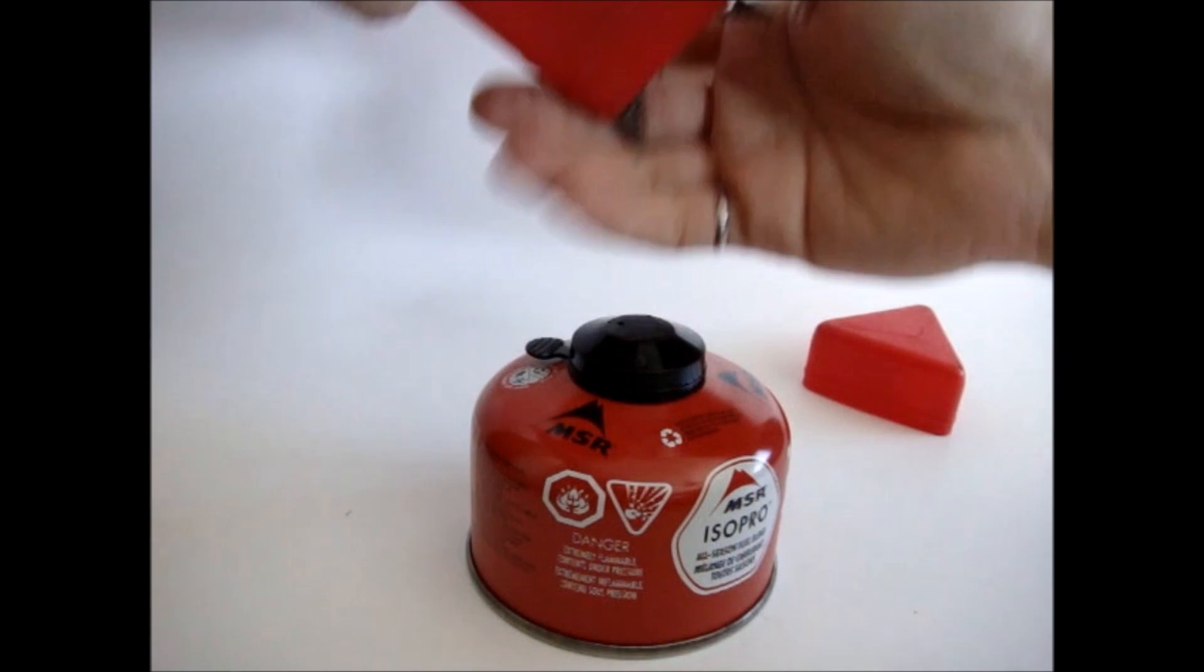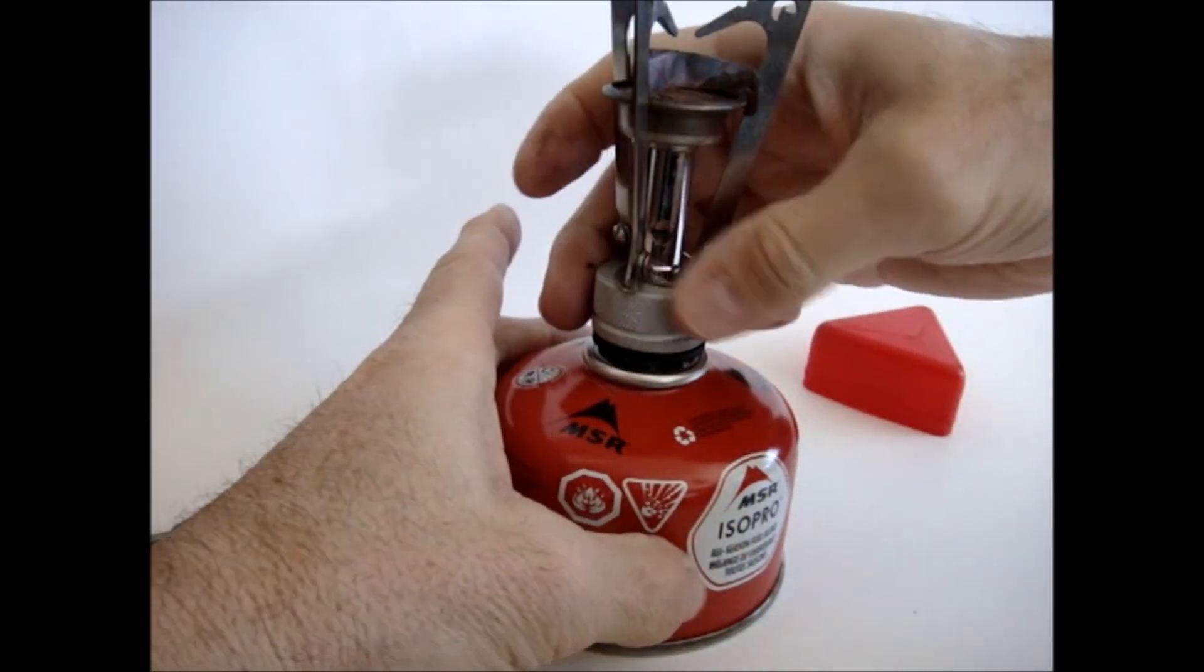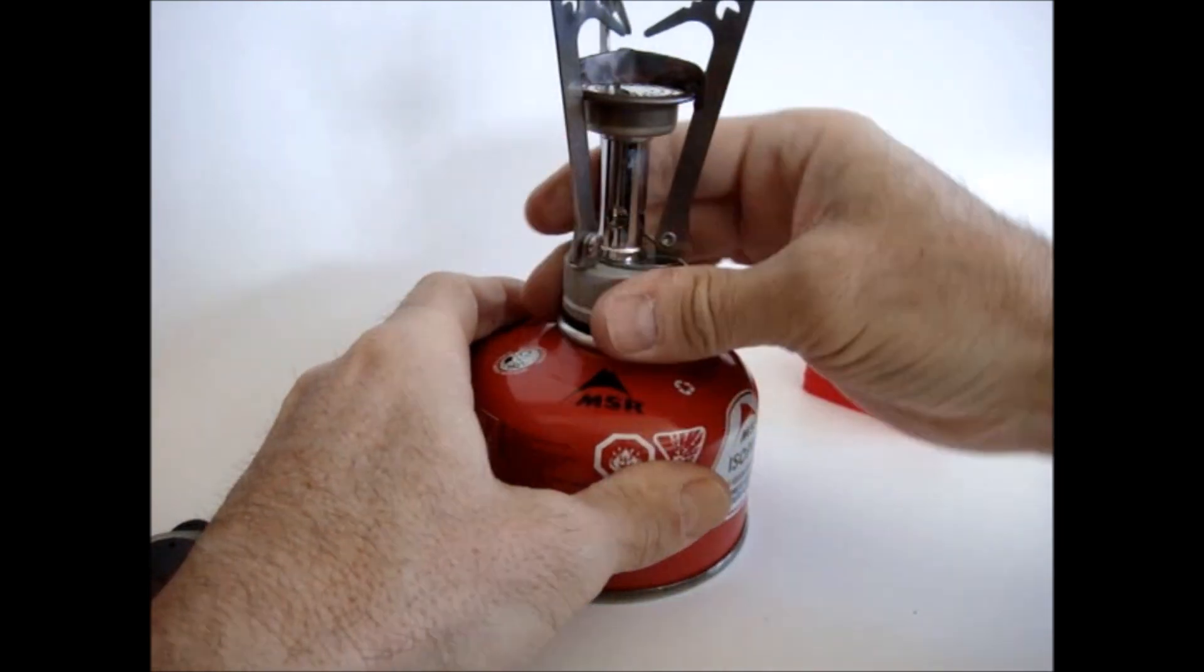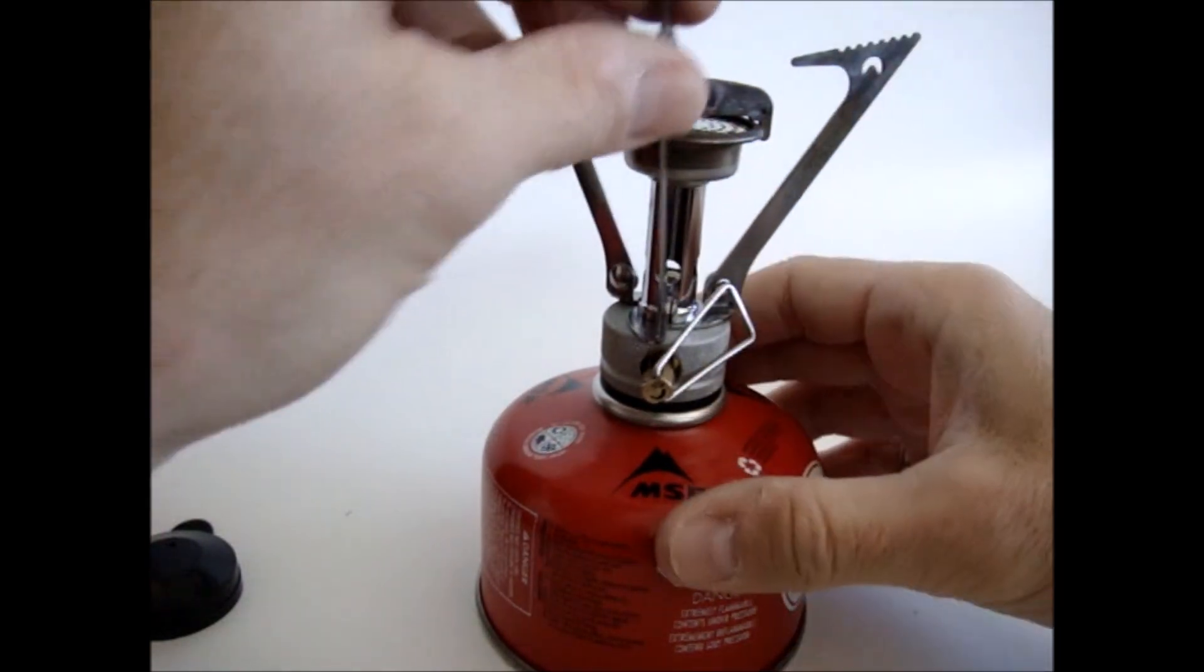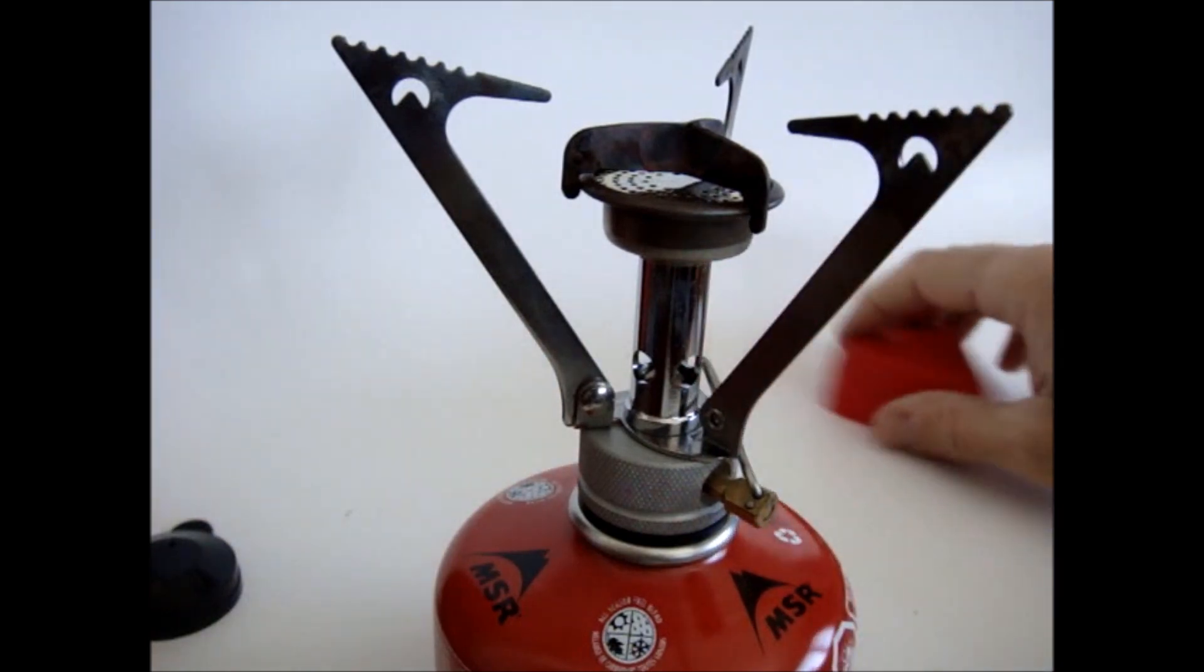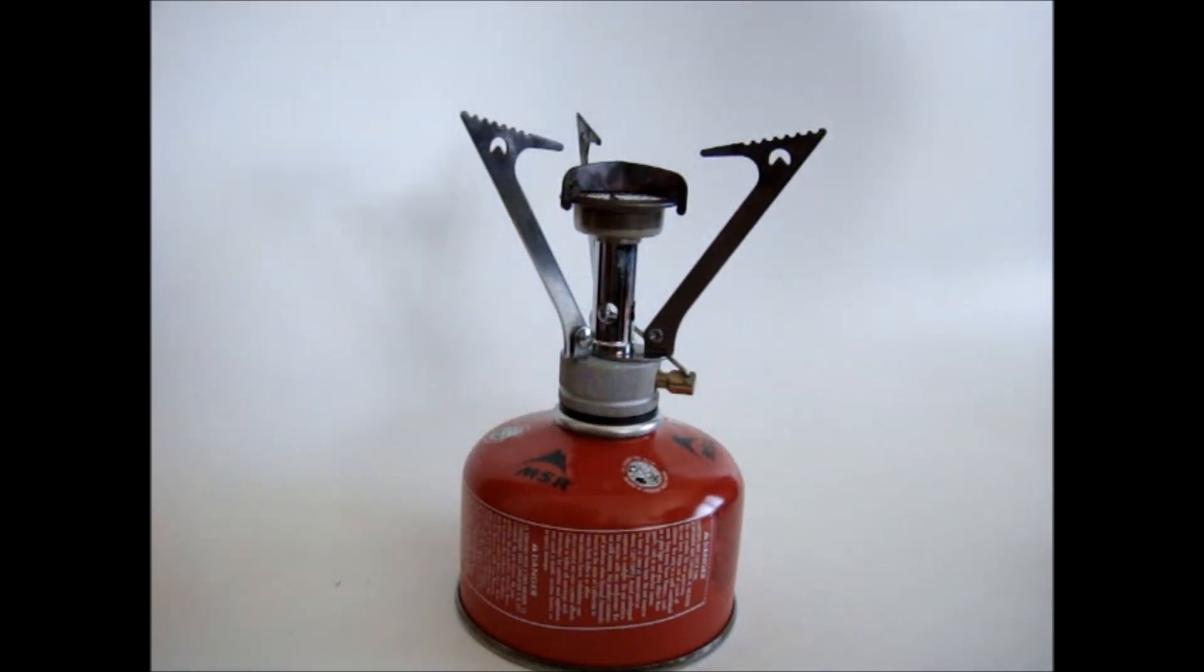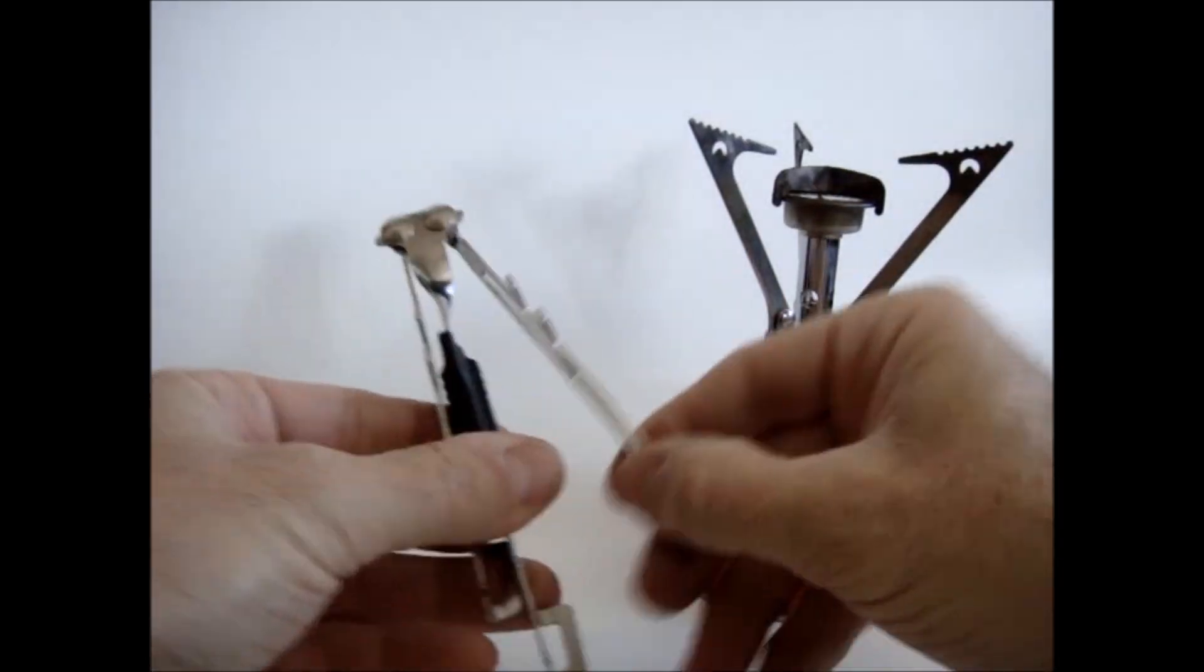When you assemble them and you try to cook on them - I'm not going to cook on this one - but you open the legs and you've got a small stove, not exactly stable. If you're putting a pot on it, it can be a little tippy. So here's a great little solution.